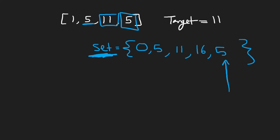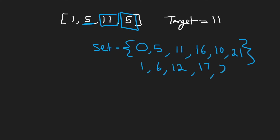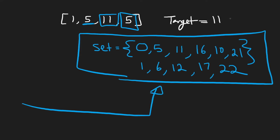Then we do the same thing with one: we add one — we get a one; five plus one is six; one plus 11 is 12; one plus 16 is 17; one plus 10 is 11, already have it; one plus 21 is 22. So basically this is the entire list of sums we could possibly create from our given input array. As long as this set contains 11, we return true. If it doesn't contain 11, that means it's impossible to sum up to this target, so we would return false.